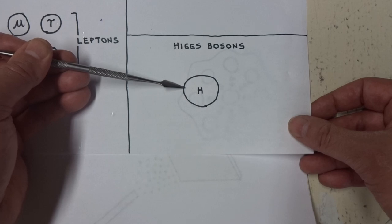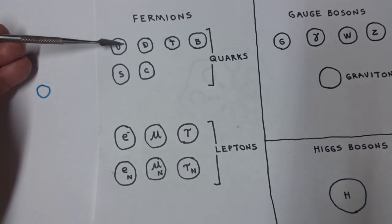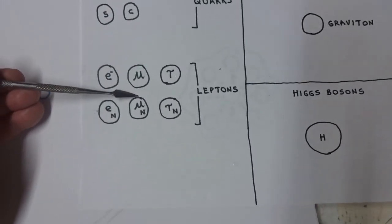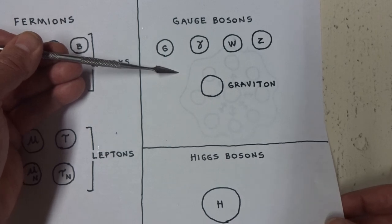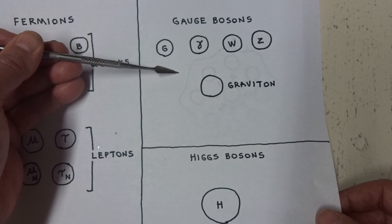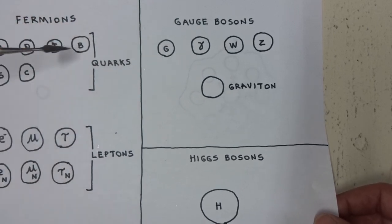The Higgs boson is what is responsible for giving the other particles their mass. The Higgs boson creates what is known as the Higgs field. When other particles, such as the quarks, the leptons, and the gauge bosons, interact with the Higgs field, the Higgs field gives these subatomic particles their mass.